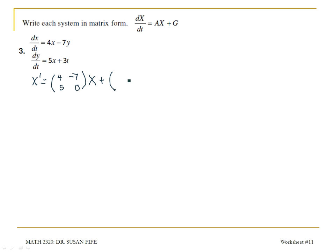And then my g is going to be 0 from the first equation, because I don't have any terms that do not contain x or y. And then I have 3t from my second equation. There's my system.